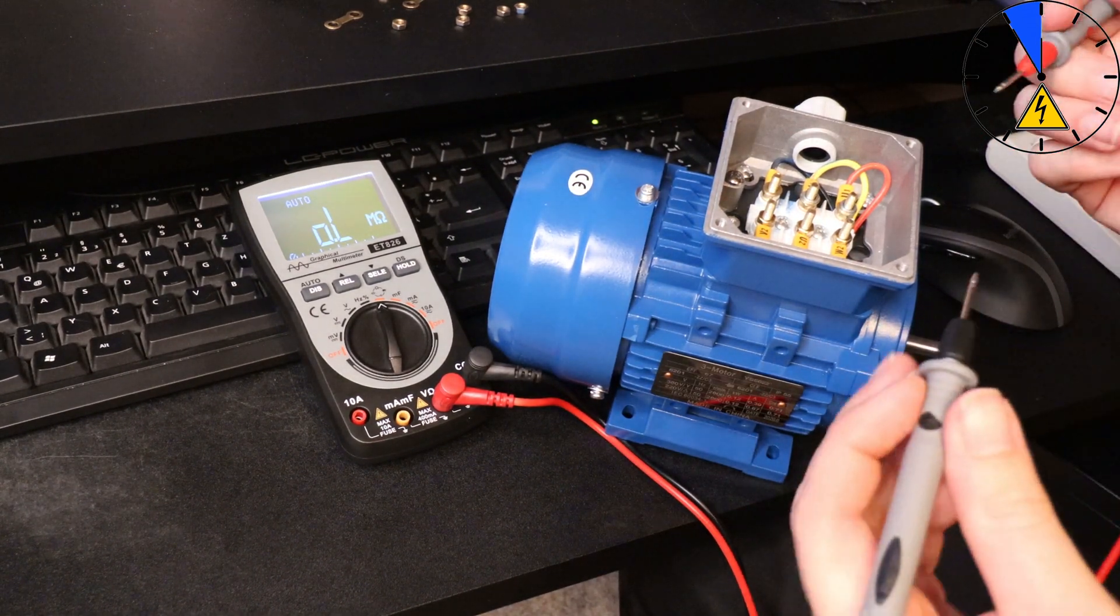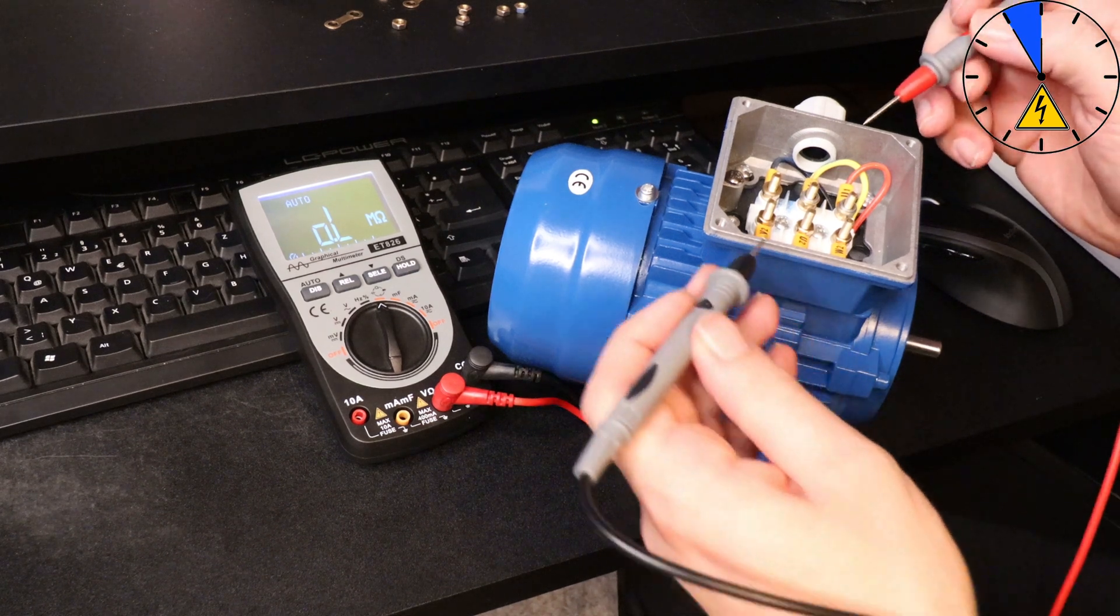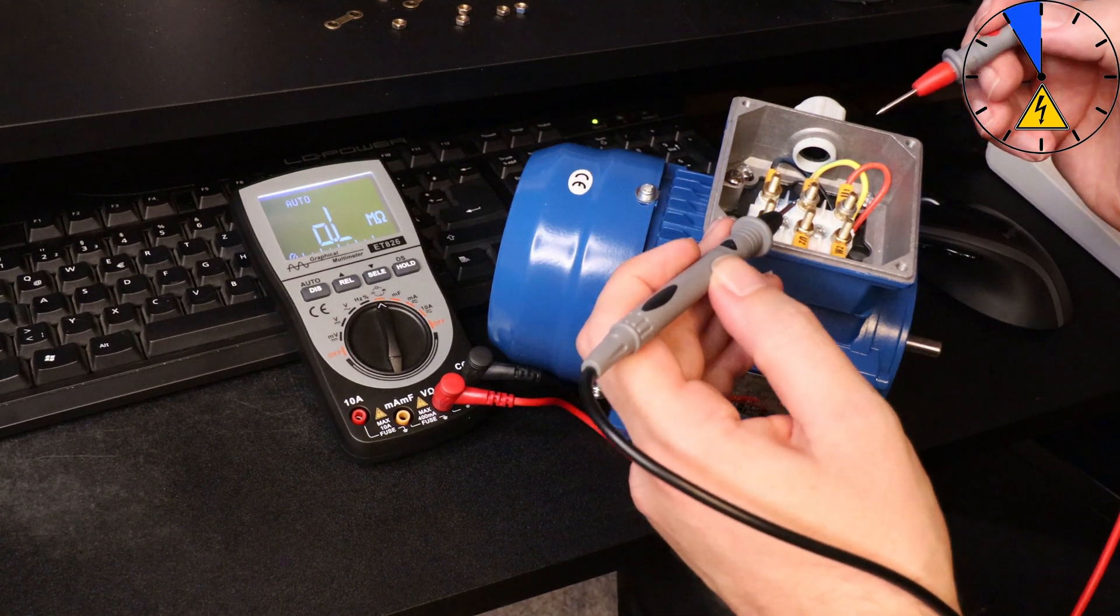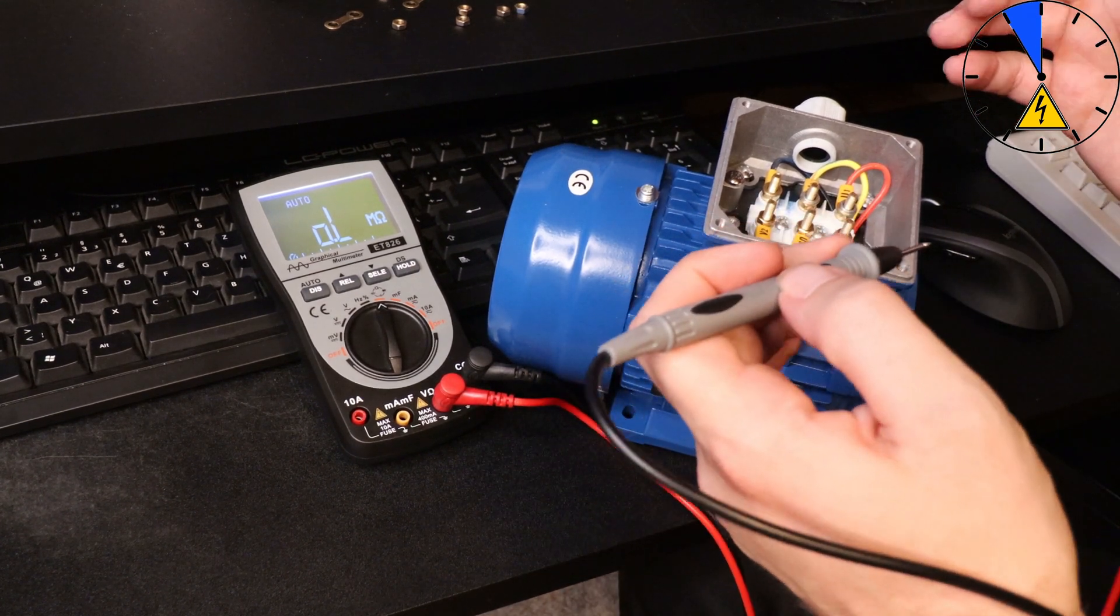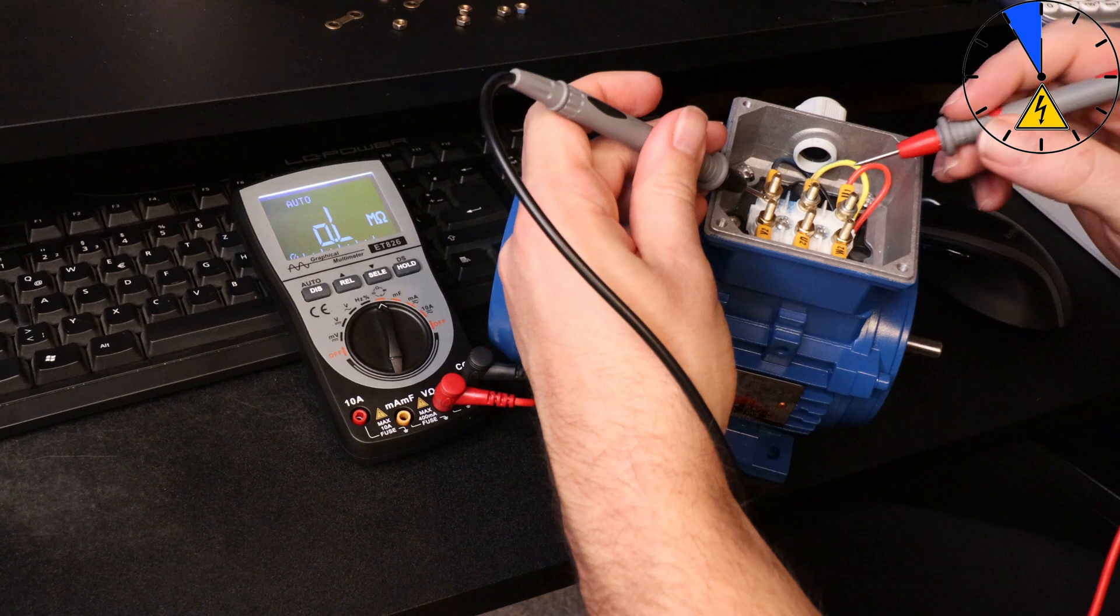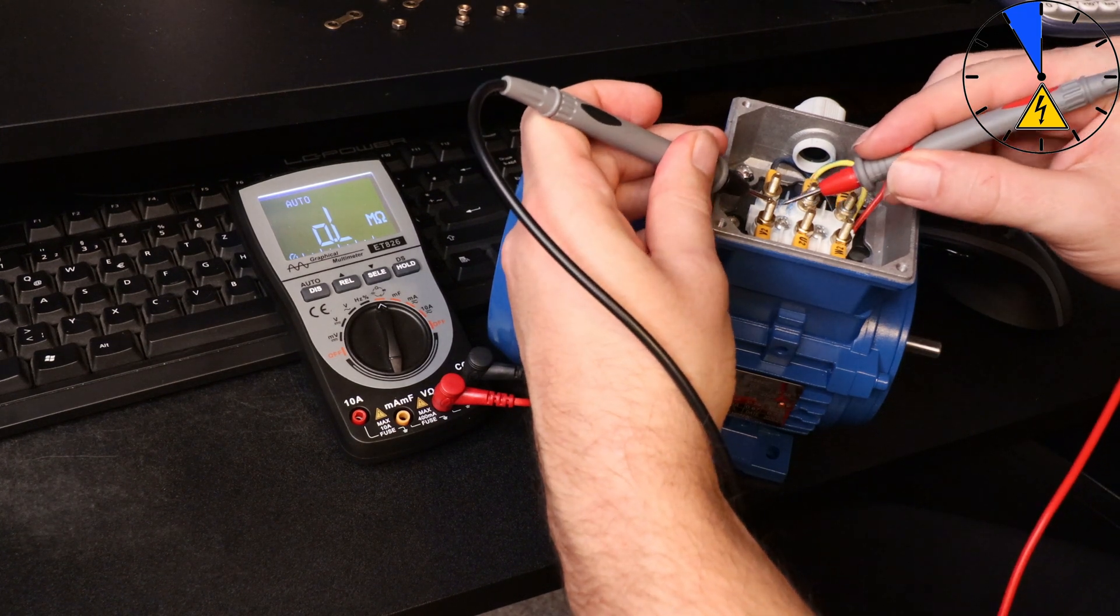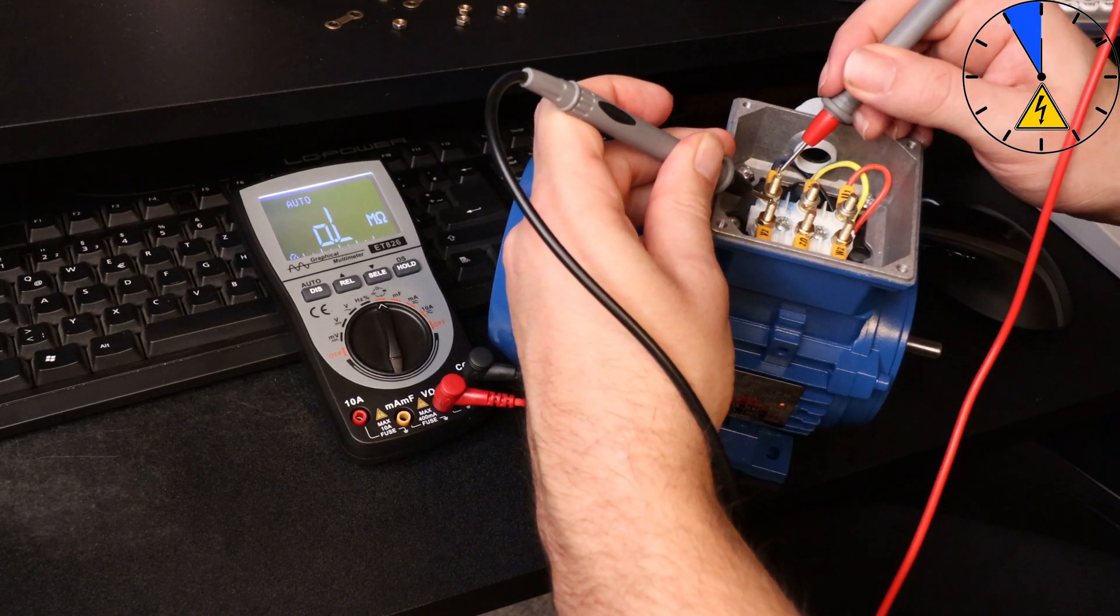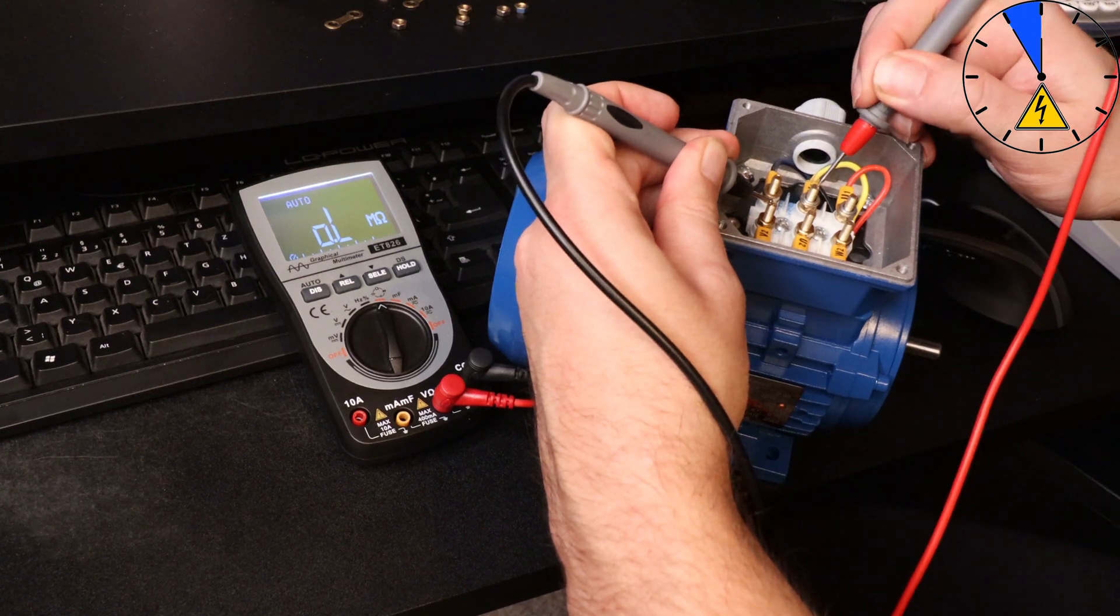This test passed. The next test, the last test is, is there a short circuit between one coil to another coil. So I go from here, from V2 to W1 to V1.